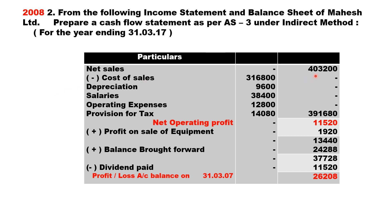We have net sales four lakh three thousand two hundred; cost of sales deducted three lakh sixteen thousand eight hundred. Depreciation deducted nine thousand six hundred — you should add it back because depreciation is a non-cash expense. Provision for tax is fourteen thousand eighty, also a non-cash expense to be added back. So these two items — depreciation nine thousand six hundred and provision for tax fourteen thousand eighty — are added back.